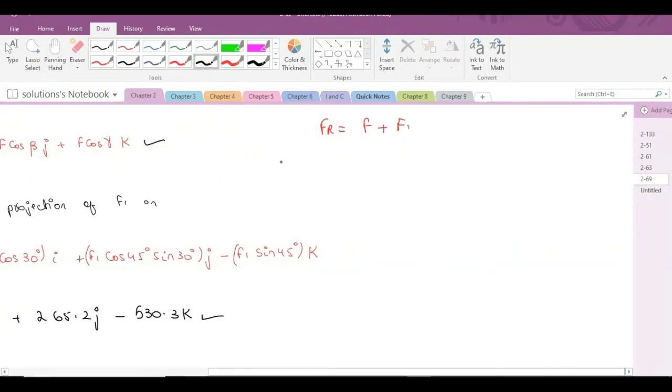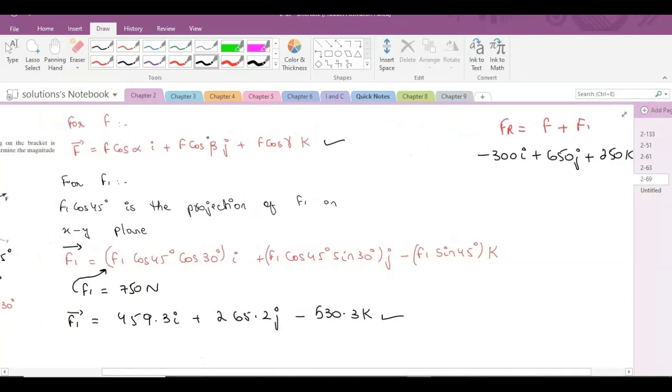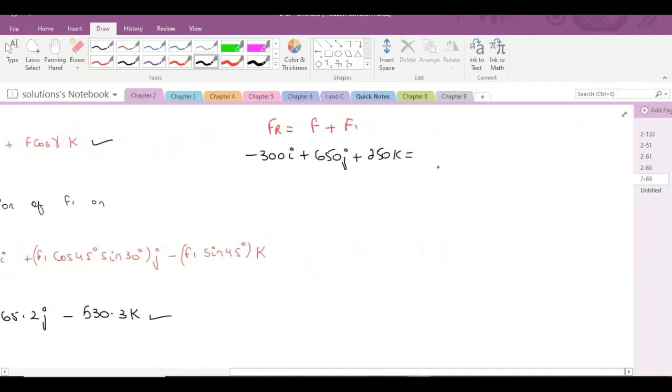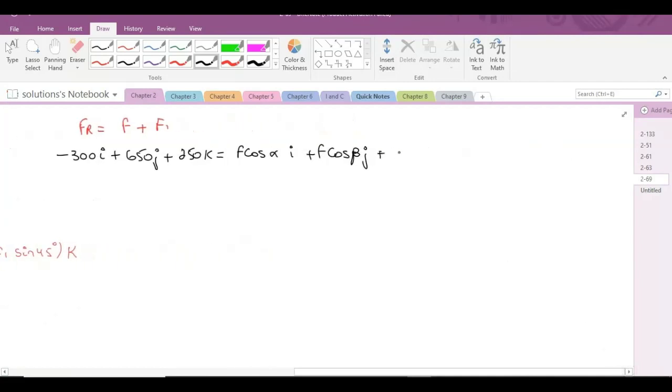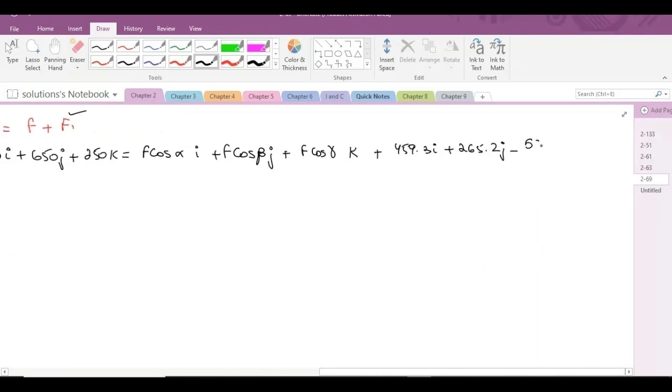The resultant force is given to us as negative 300 i plus 650 j plus 250 k equals F, and F in terms of Cartesian vector form is...